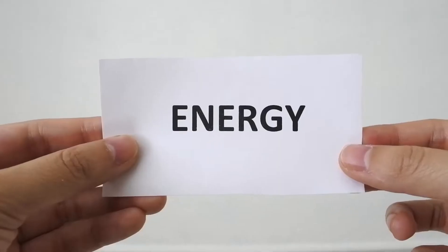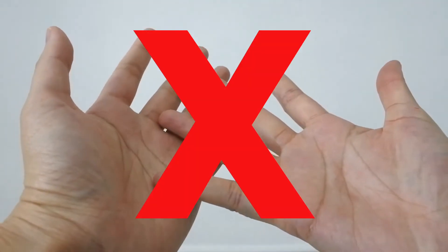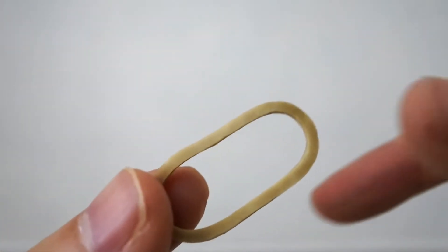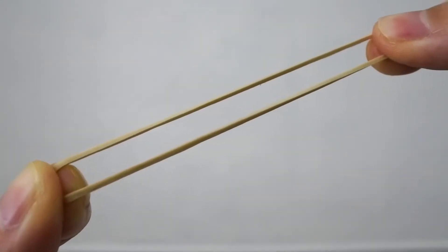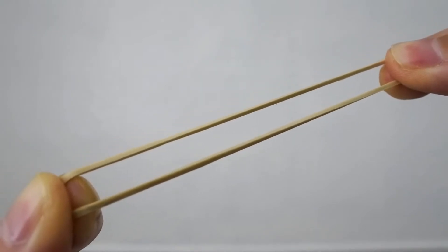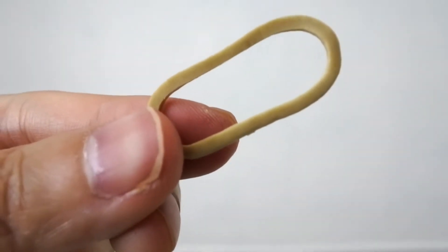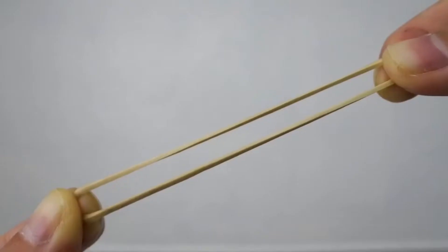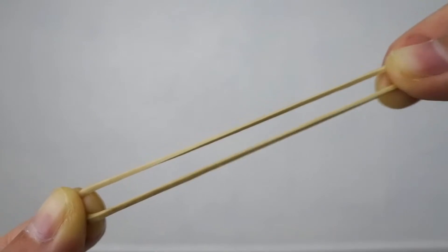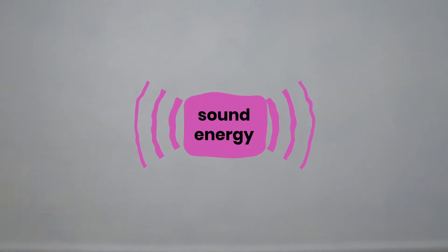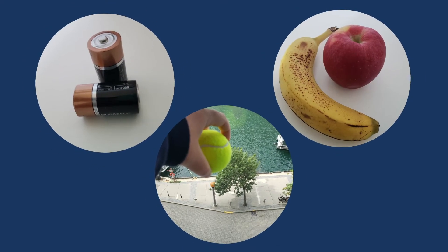Since you can't create or destroy energy, energy is constantly transforming into another type. For example, if I pull on this rubber band, it now has potential or elastic energy — there's energy stored inside the rubber band. If I let go, there's no more energy stored in the rubber band. Where did it go? It was transformed into kinetic energy. There was also some sound energy released — did you hear it?